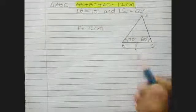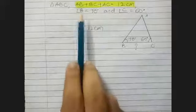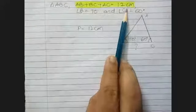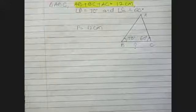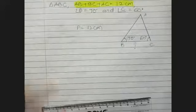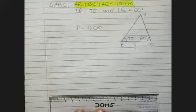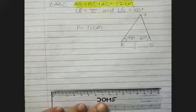There is no base value given separately, but the total perimeter is given as 12. So I'm going to draw the base as 12.